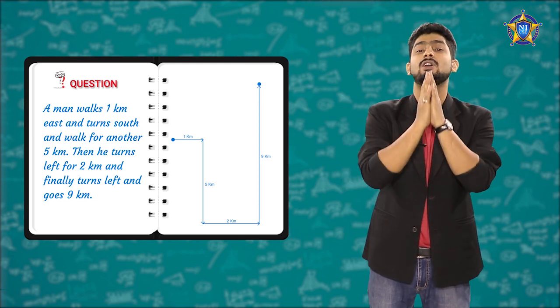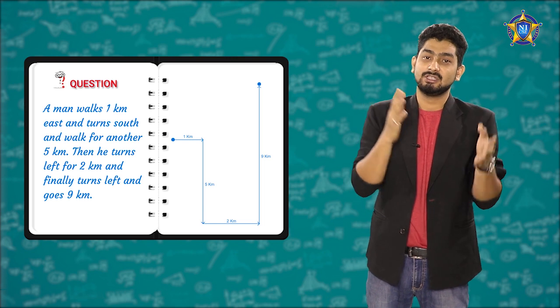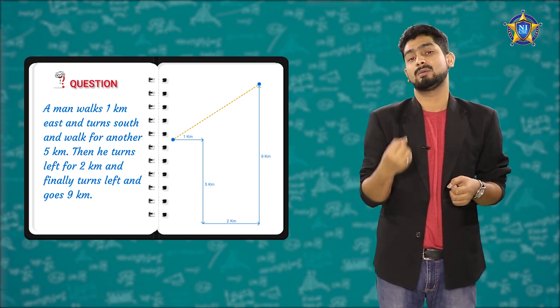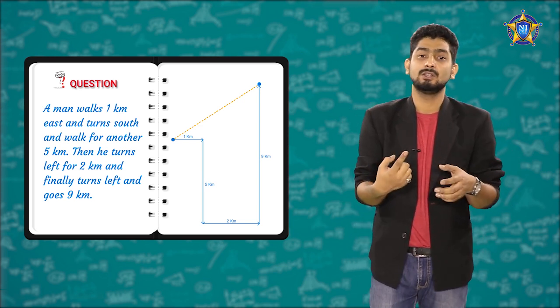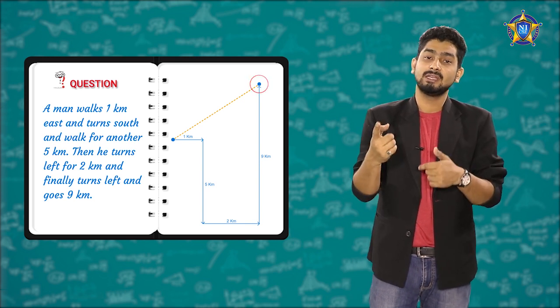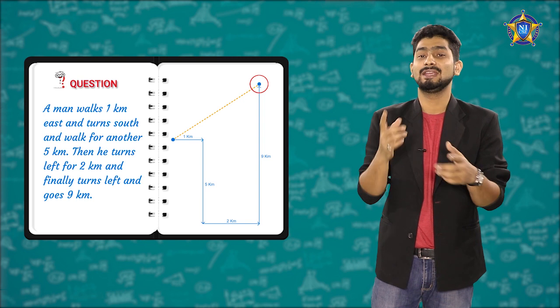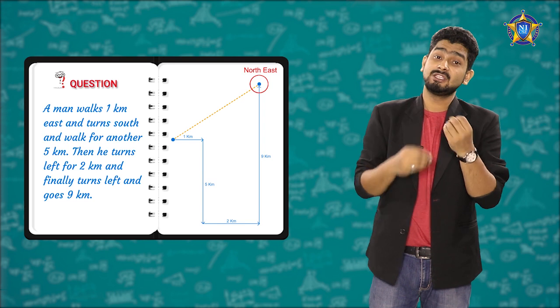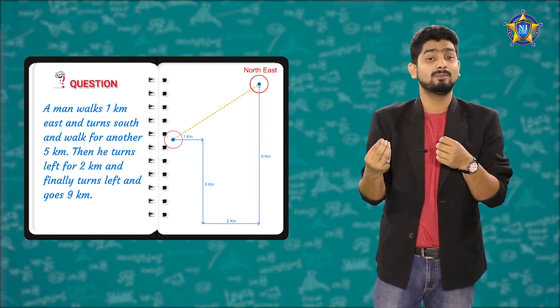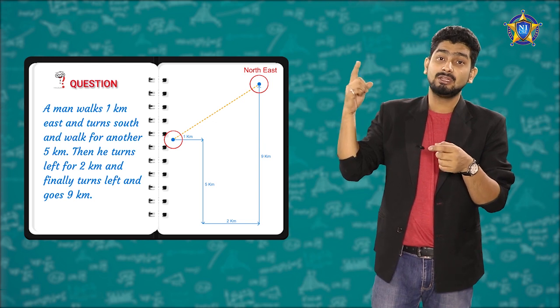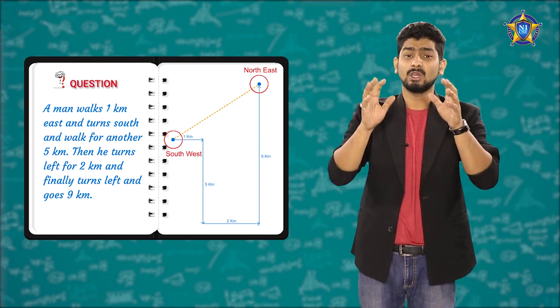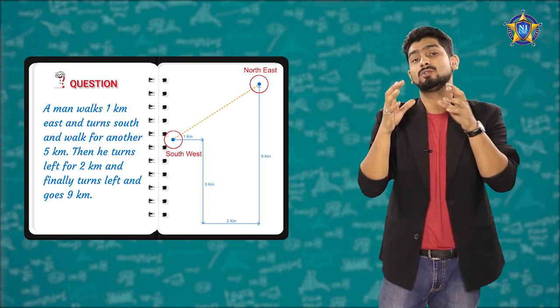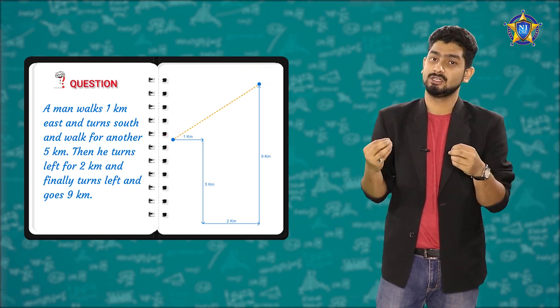That is how you can solve direction tests. This is your starting point and that is your finishing point. Direction tests can come up with three questions. Question number one: which way is your final point to the starting point? If you are talking about the final point, he is in the northeast direction. If it says which way is your starting point from the final point, it is not northeast. From that point to this point, this is southwest. You have to remember what the question asks.